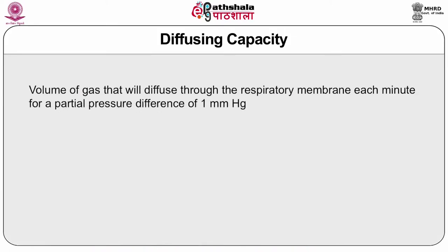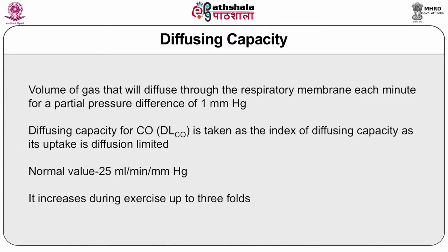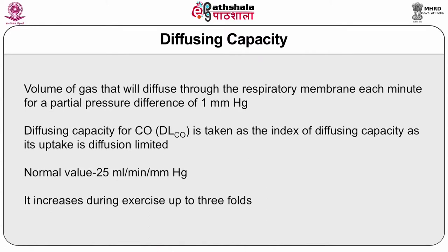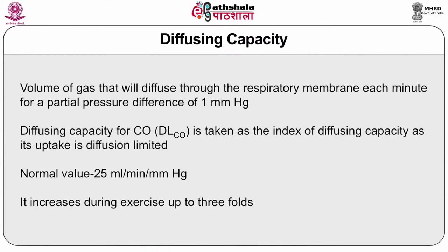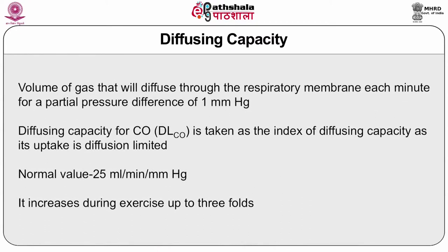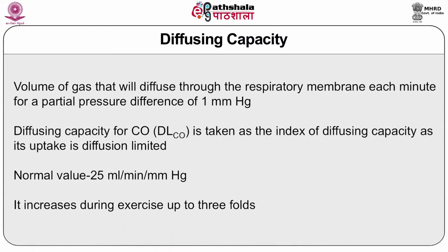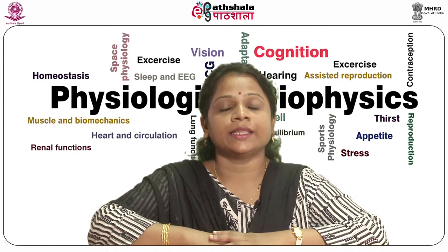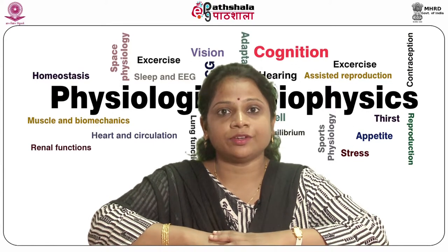Diffusing capacity is the volume of gas that will diffuse through the respiratory membrane each minute for a partial pressure difference of 1 mmHg. Diffusing capacity for carbon monoxide is taken as the index of diffusing capacity since its uptake is diffusion limited. The normal value for diffusing capacity for carbon monoxide is 25 ml per minute per mmHg, and it increases up to three-fold during exercise. The PO2 of alveolar air is 100 mmHg and that of blood entering capillaries is 40 mmHg; oxygen diffuses across the respiratory membrane and PO2 of blood rises to 97 mmHg, then falls to 95 mmHg in the aorta.